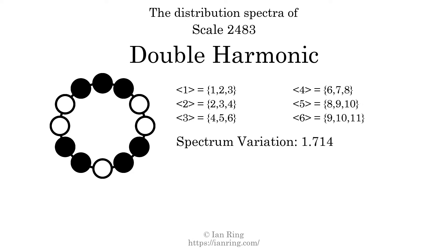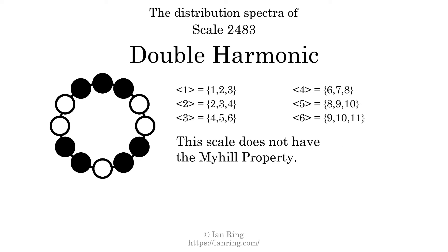The spectrum variation is the sum of all the widths divided by the number of tones. The spectrum variation of this scale is 1.714. Since the variation is greater than 0, this indicates that the scale is not perfectly even. The highest spectrum width is 2; since this is greater than 1, we know this scale is not maximally even. This scale does not have the Myhill property. Since the generic interval ranges overlap, this scale is an improper scale.